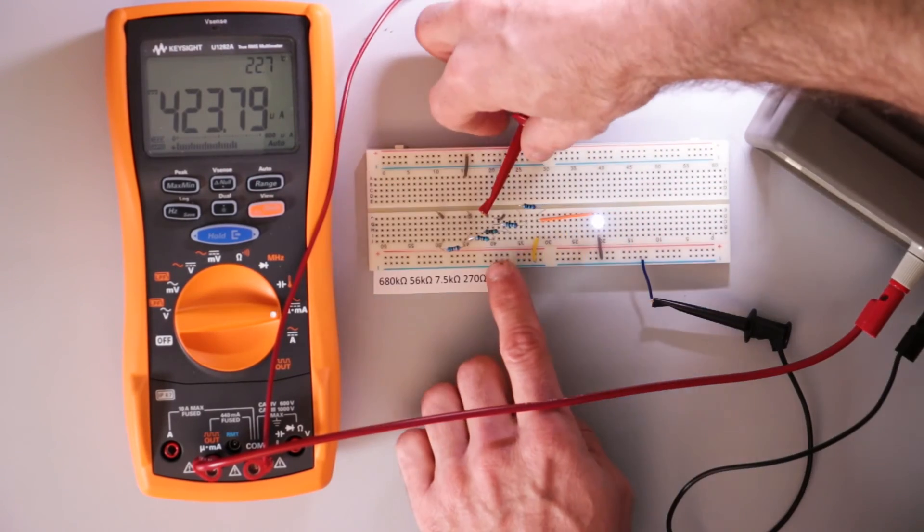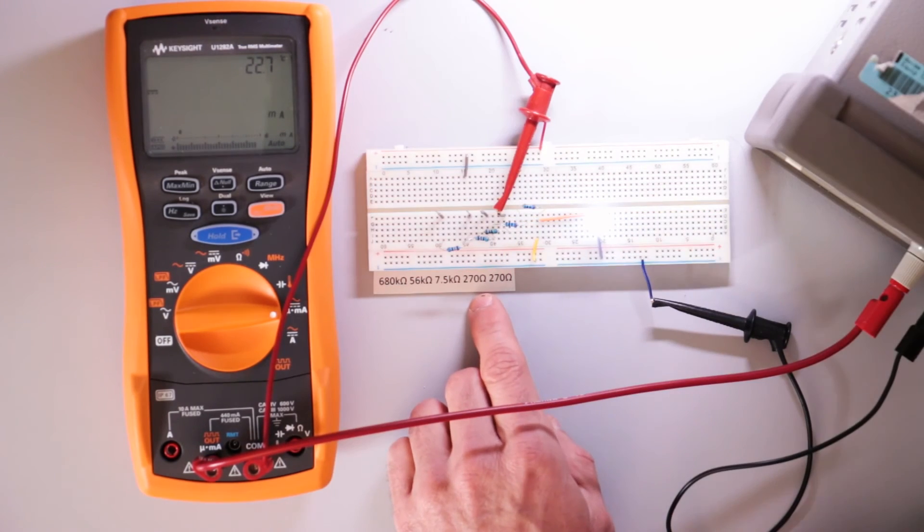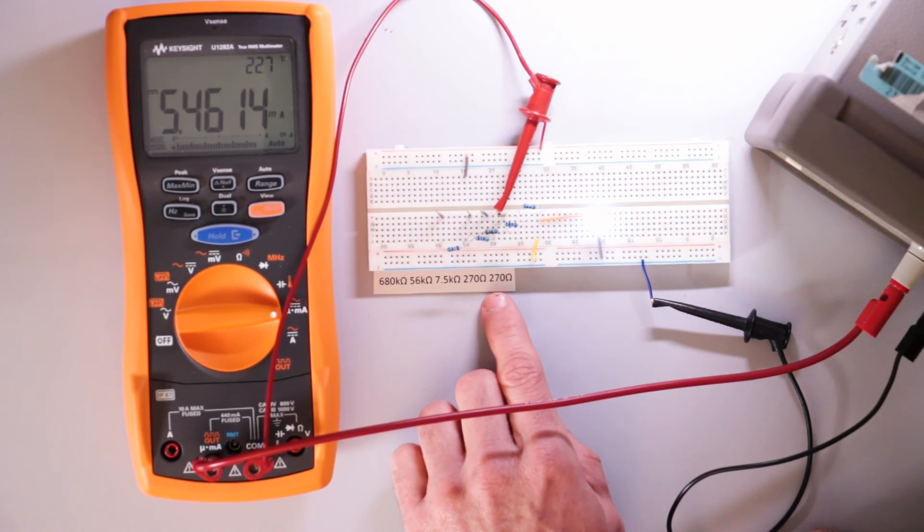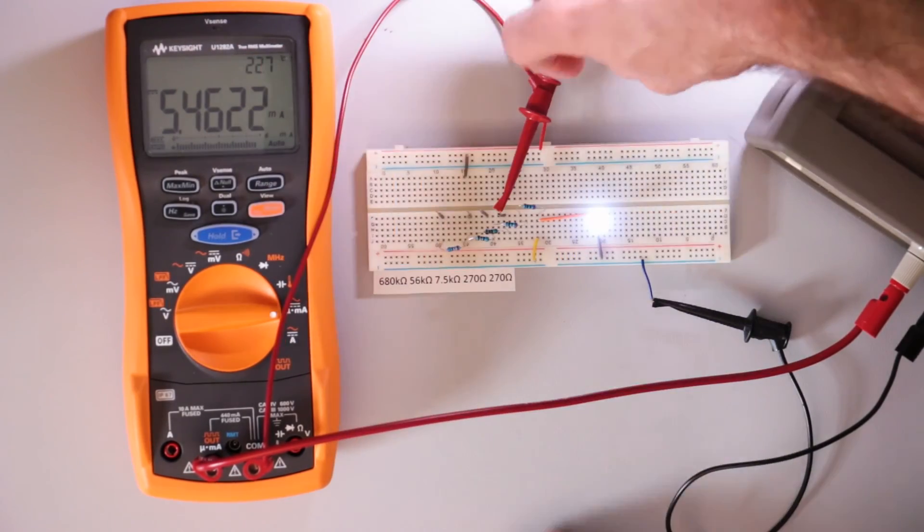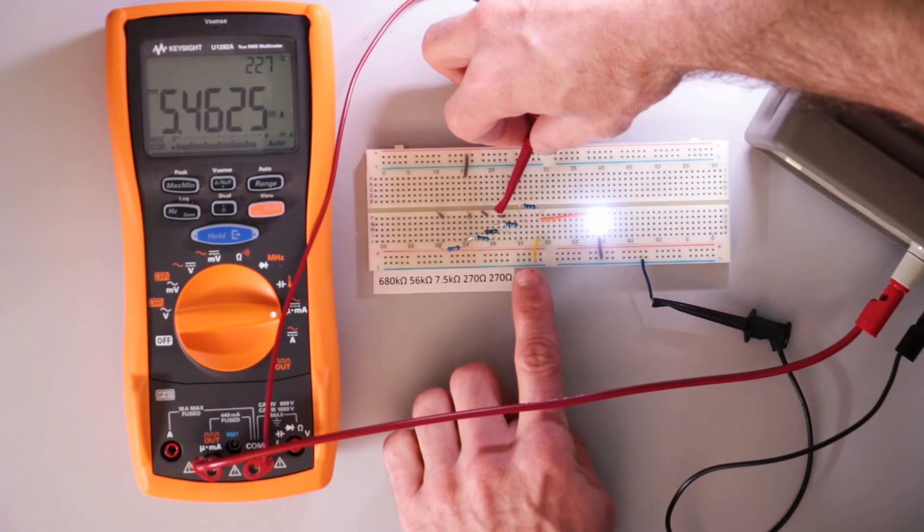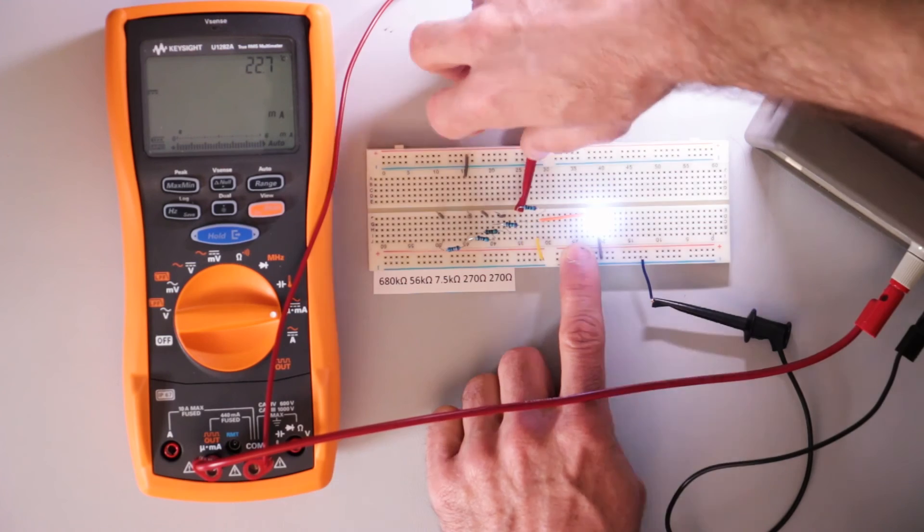And over now, so what we have now is the two 270 ohm resistors in series so it's quite a bit brighter and 5.4 milliamps. And then the last one is just the 270 ohm resistor and so the LED is really bright.